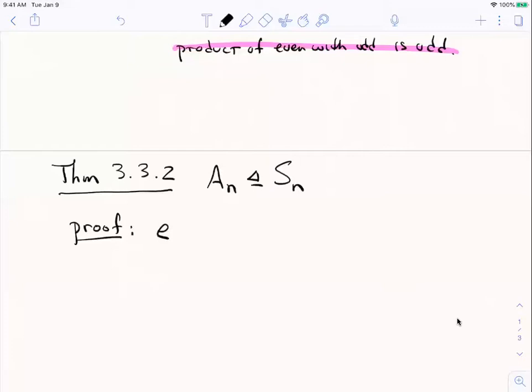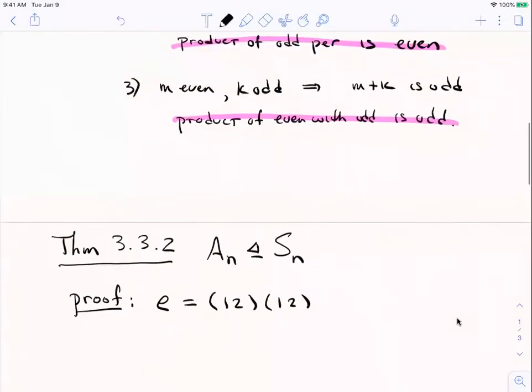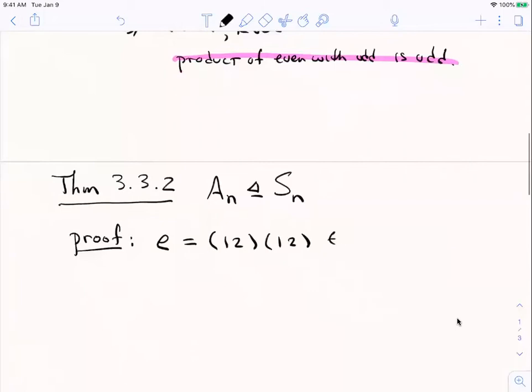Well, the identity is a product of no transpositions, if you like. Zero is an even number. But maybe if you don't like that, as long as n is at least two, I can write the identity as the product of a transposition with itself. If I interchange one and two and then interchange them again, I get the identity. So that's certainly even. It's a product of two transpositions. So that shows that this is not an empty set. There exist even permutations, in particular, the identity.